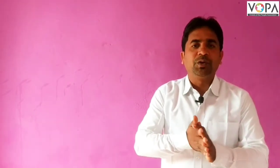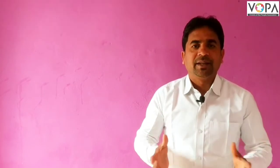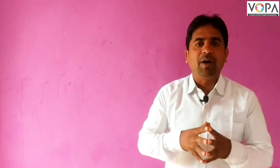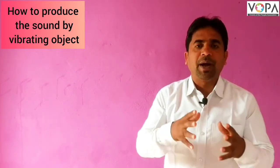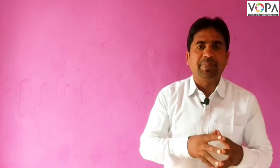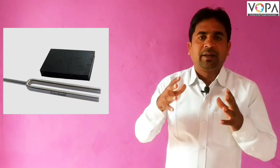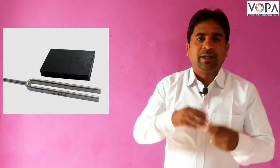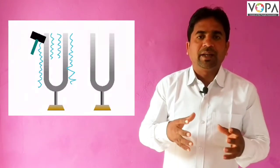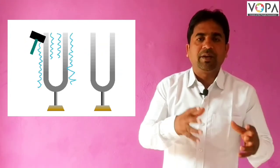Before this, we understood that sound is produced by a vibrating object. Now we discuss how sound is produced by a vibrating object, using the example of a tuning fork. Look at this picture — it has one stem and two sides, and when the middle metal part is struck on a rubber pad, it produces vibrations.